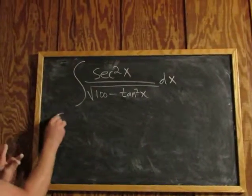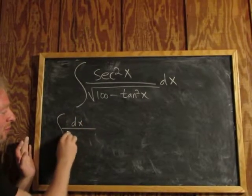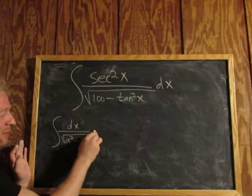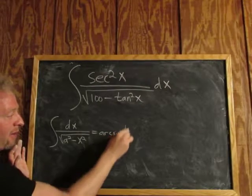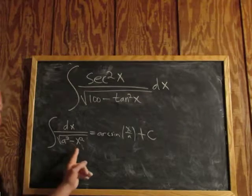So recall that if you integrate dx over the square root of a squared minus x squared, that's equal to the arc sine of x over a plus c. So that's the formula we're going to use here.